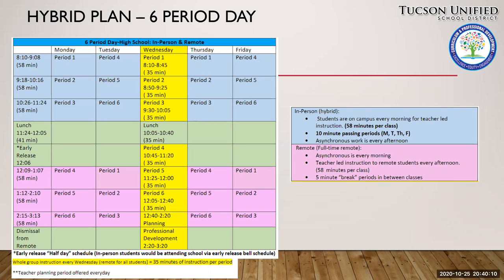For example, on Monday morning you'll meet with your first, second, and third period students who have opted for in-person instruction, while on Tuesday afternoon you will meet with the remainder of those first, second, and third period students who have opted for full-time remote instruction. Therefore it takes two days before you synchronously meet with all of your students from a given class period.